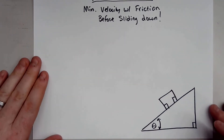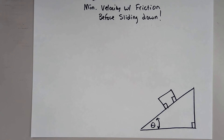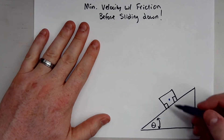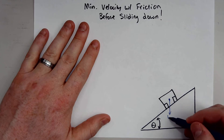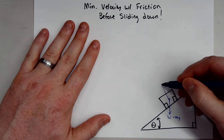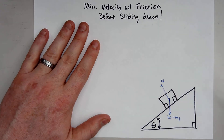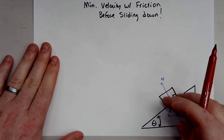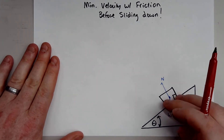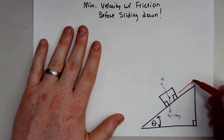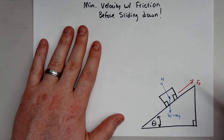The first thing we need to look at is a free body diagram. We have a weight pulling down — we know weight is equal to mg. The car also has a normal force, and in this situation there's friction. If the car is going to slide down the ramp, we ask: what's the minimum velocity?